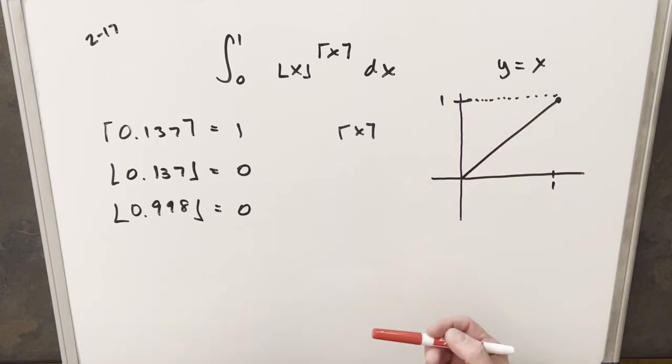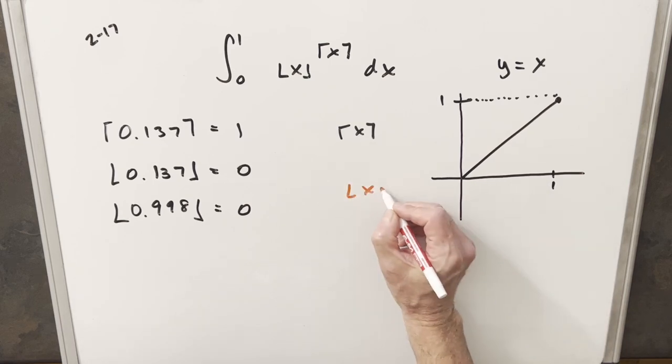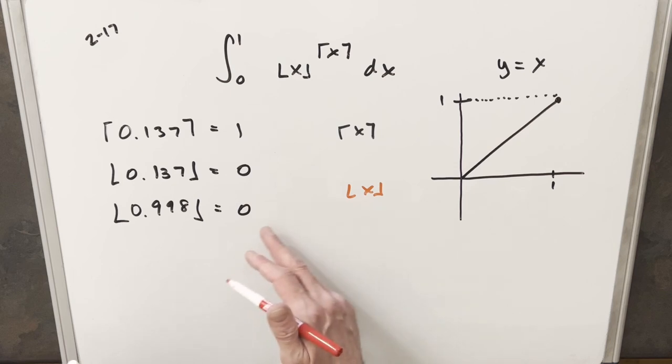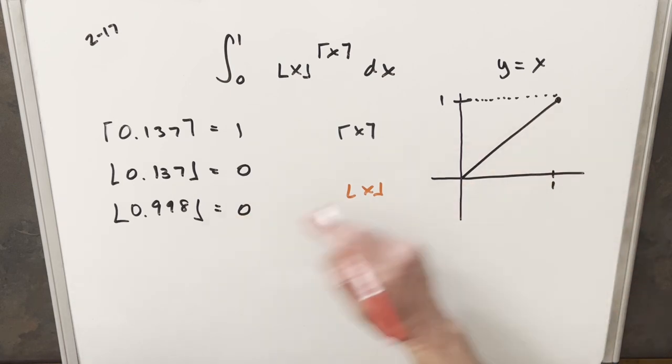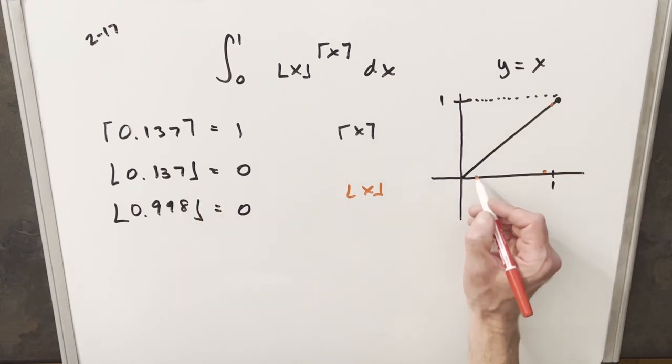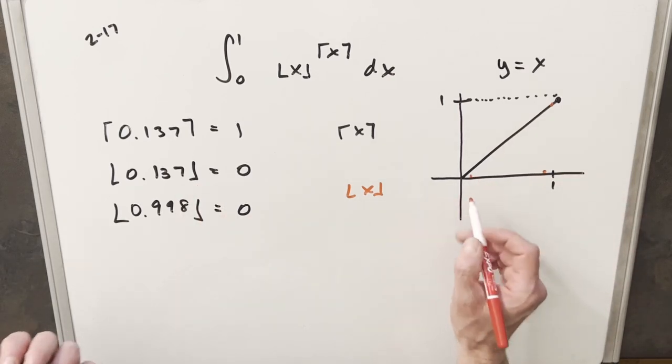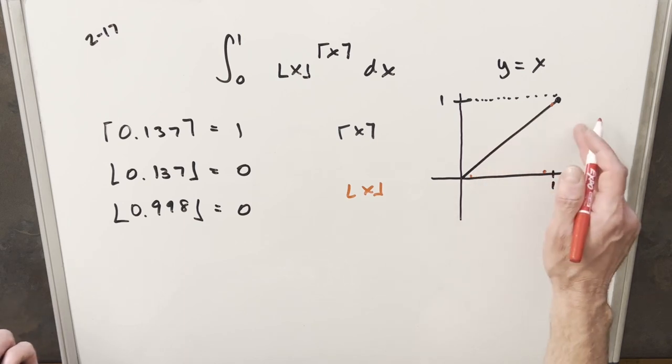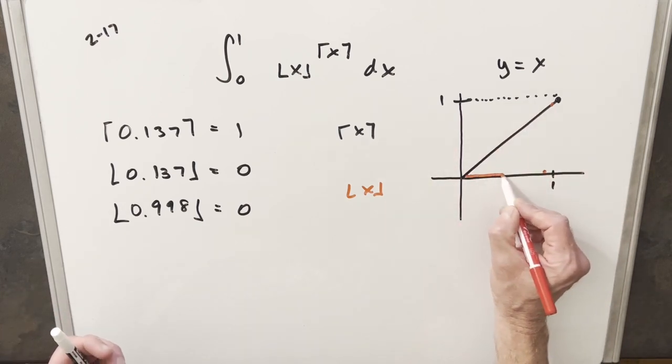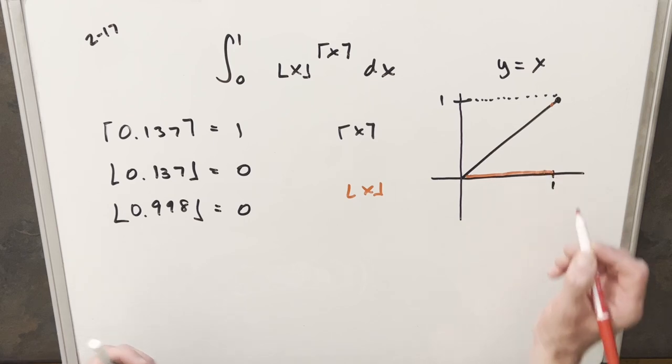I was trying to find a blue marker but couldn't, so we'll use red for the floor. For the floor, values like 0.9998 will bring us down to 0, and 0.137 will also be 0. For all values between 0 and 1, the floor always takes us down to 0.